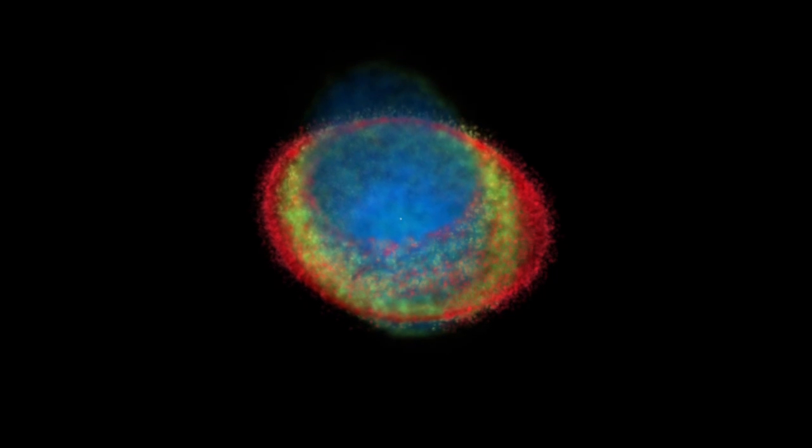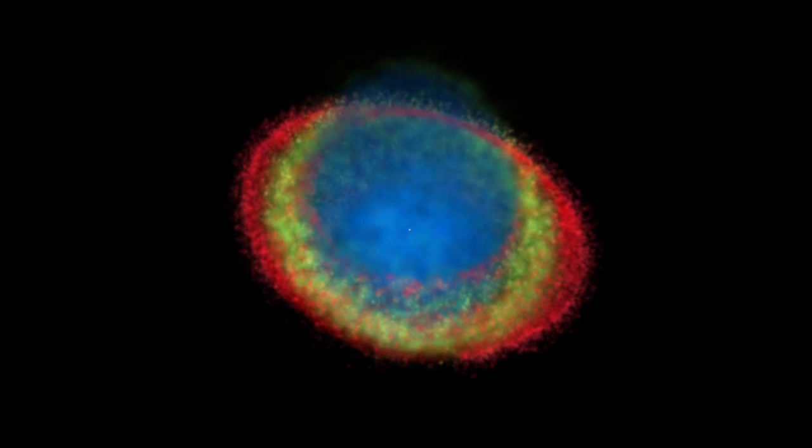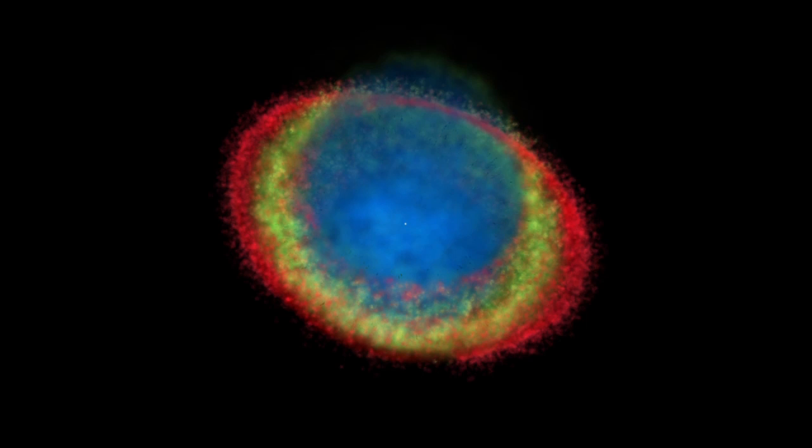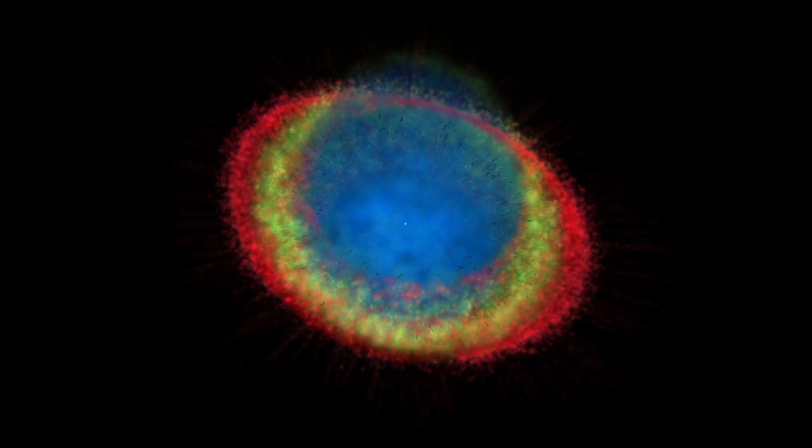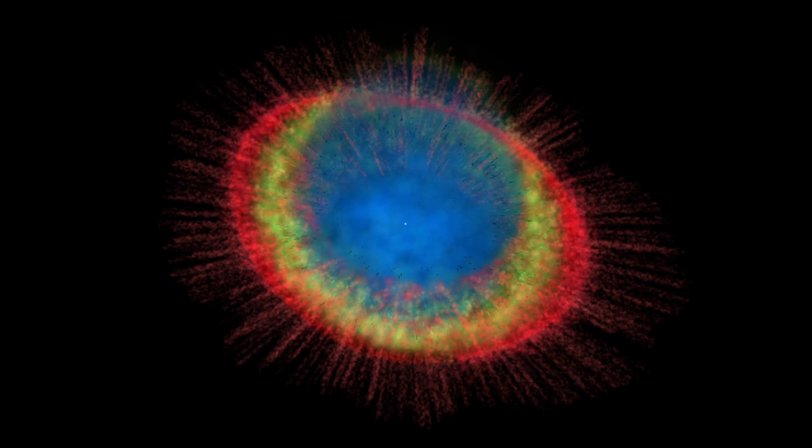A number of dense dark knots of gas circle the inside of the red nitrogen ring and have so far resisted the blast of stellar winds and radiation. The shadows of these knots can be seen as long thin spikes around the ring.